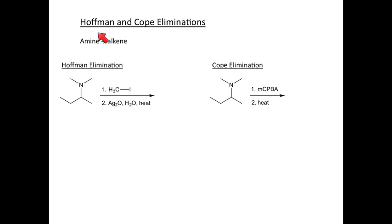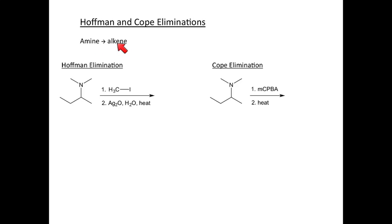In this video, we are going to talk about the Hoffman and the Cope elimination reactions. In both of these reactions, we go from an amine and convert the functional group into an alkene. So we're going to break carbon-nitrogen bonds to form alkenes in both the Hoffman and the Cope elimination.